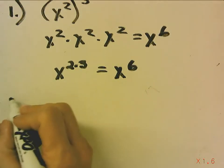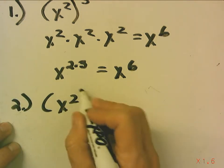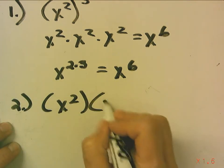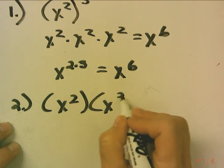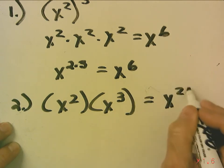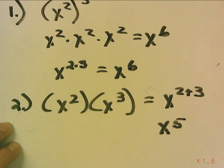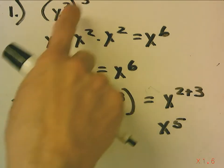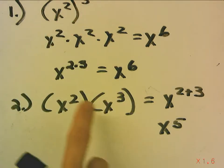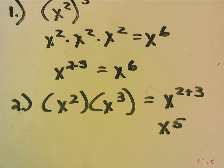Now let's compare that to x squared times x cubed. You just add 2 plus 3, and this is x to the fifth. So when it's a power of a power, you multiply. When it's the same base and you're multiplying, you add the exponents.